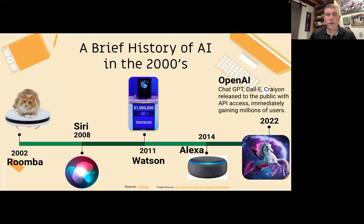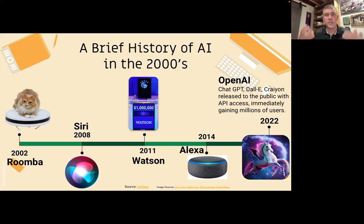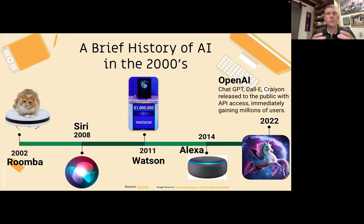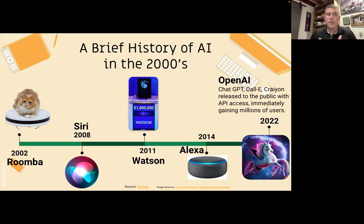Alexa comes out in 2014 — the one we're all very familiar with. Google Home comes out in 2016. We're able to use those tools every day. But then this is the kicker: 2022, this is when everything goes nuts. The super-intelligent, super-powerful stuff was kept behind IBM's big paywalls — millions of dollars to get Watson. Sam Altman comes out and decides he wants to build an AI tool open to the public. He forms OpenAI, builds the product, and releases ChatGPT, DALL-E, and Crayon to the public in 2022.